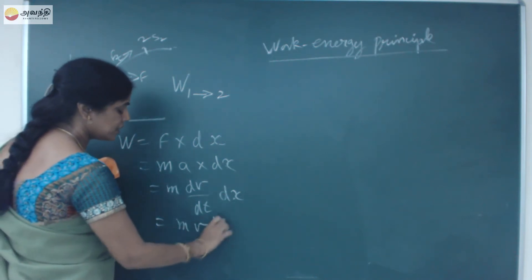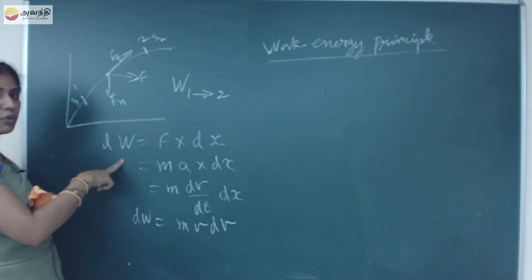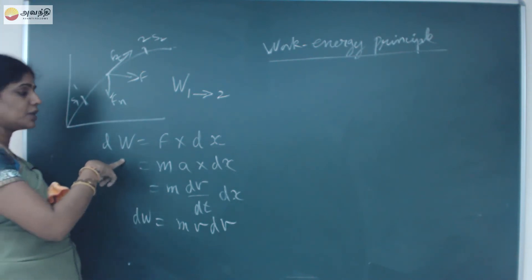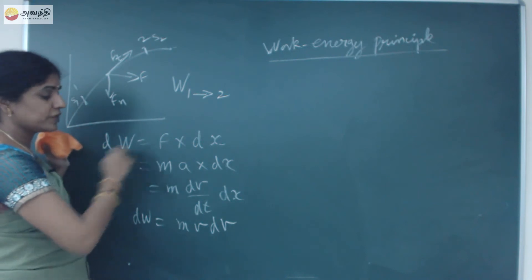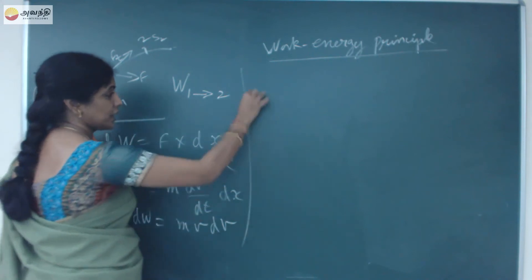So again dx by dt, we get M v dv. This is your small amount of work done. We are calculating only the small amount of work done by moving this object. So dw is equal to mv dv.